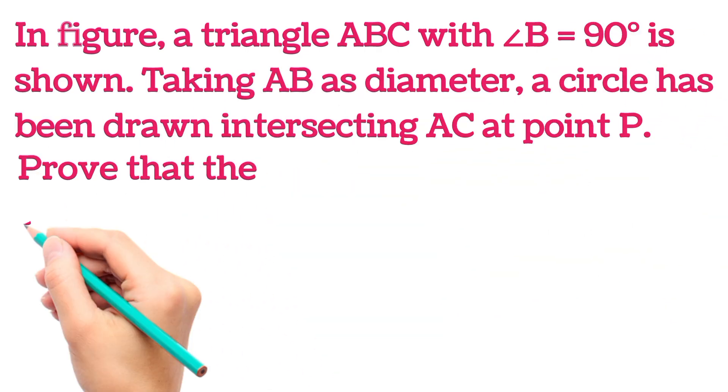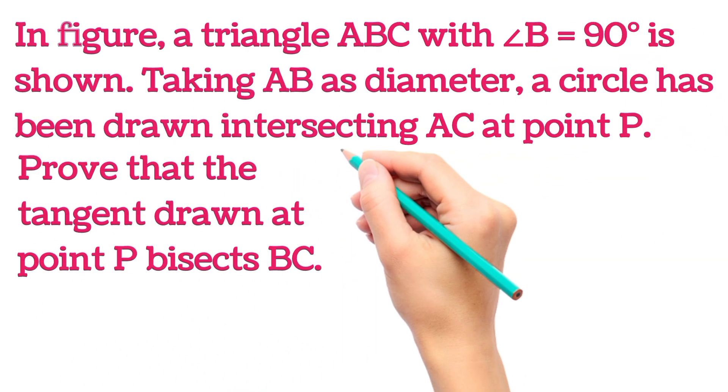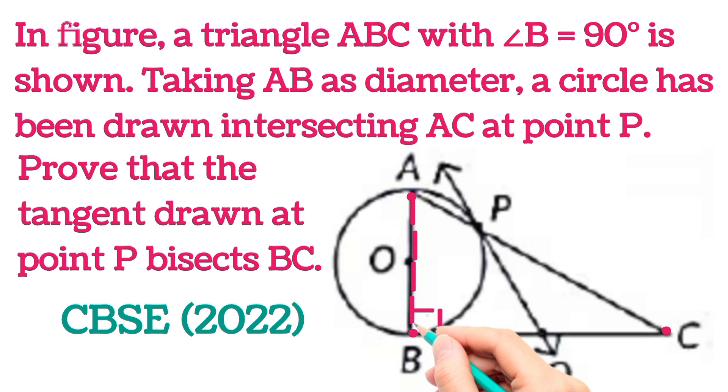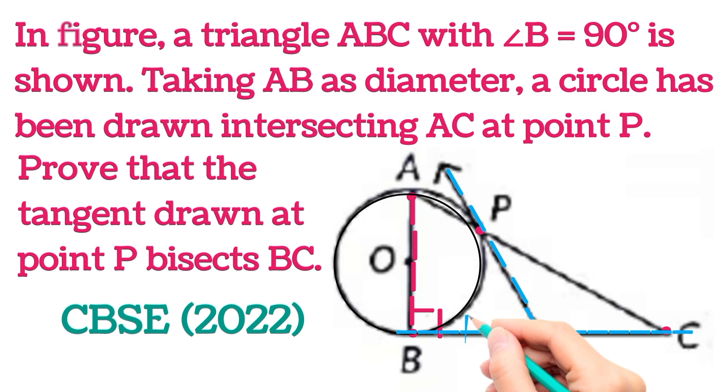Hello everyone, today I am taking another interesting question which says that ABC is a triangle with angle B 90 degrees, taking AB as a diameter a circle is drawn which intersects AC at point P. Then we have to prove that tangent drawn from P bisects BC, that is BQ is equal to QC. So let us see how to solve this question.